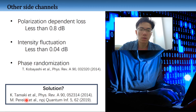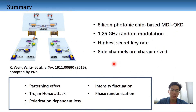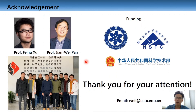To summarize this talk, we experimentally demonstrate a 1.25 GHz chip-based MDI QKD, which is amongst the highest reported so far. We also noted several loopholes in our high-speed chip transmitter and discussed the origin of the loopholes and their impact on our system. Some of them have negligible effects on the secret key rate; others can be considered in the security proof but need future work to improve performance. I'd like to take the opportunity to thank my supervisor Fei Xu, Shi and Jin Wei Pan, and my colleagues. Thank you for your attention.